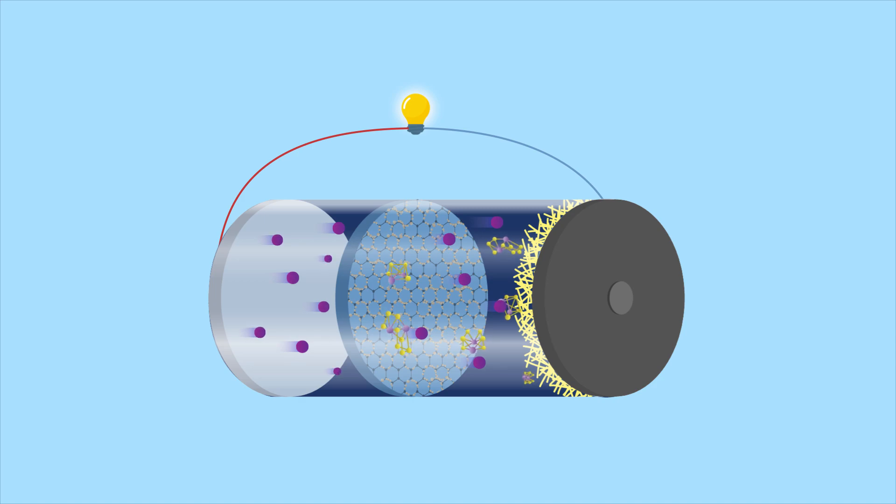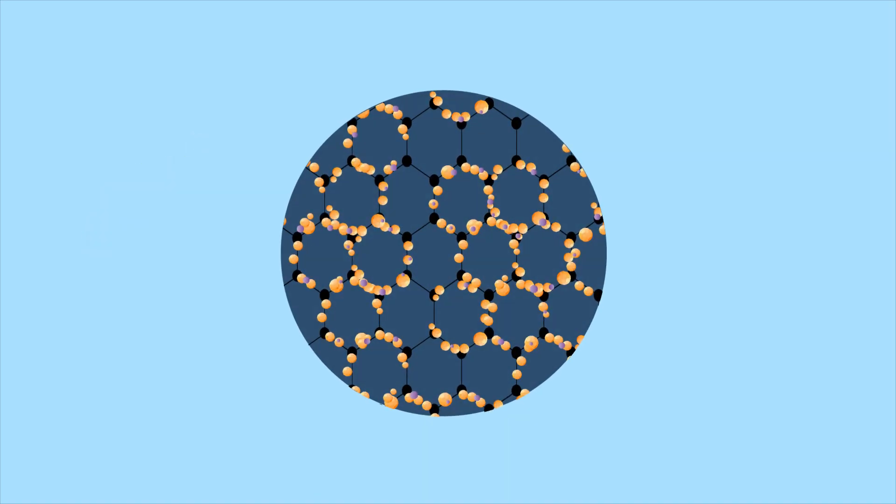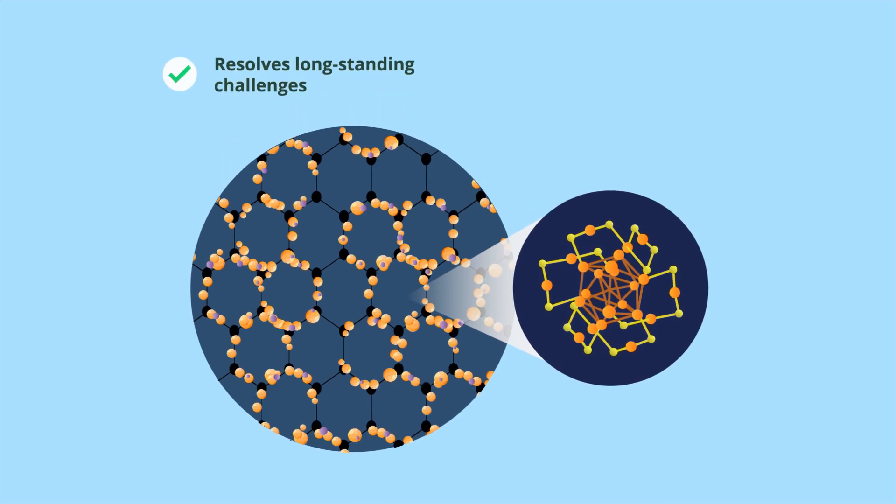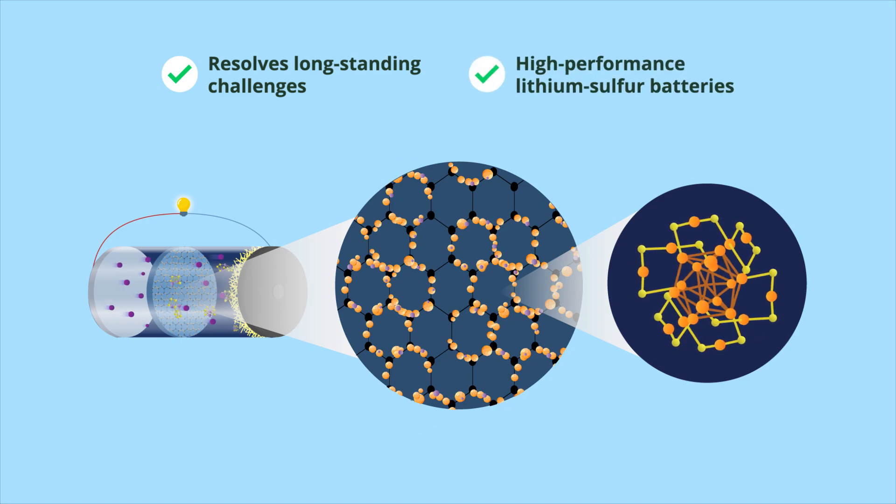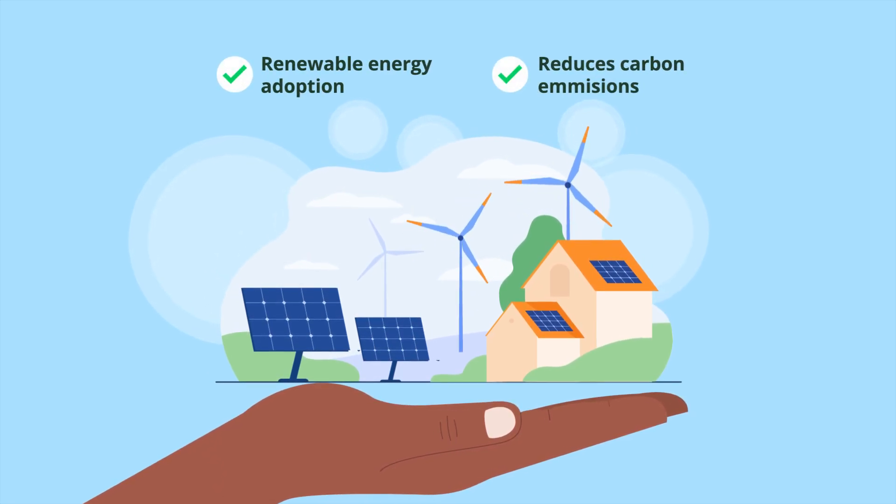Consequently, a lithium-sulfur battery with the proposed separator exhibited high reversible specific capacity and rate capability. This innovative integration of metal nanoclusters into the battery's design not only resolves long-standing challenges, but also paves the way for high-performance lithium-sulfur batteries to support renewable energy adoption and reduce carbon emissions.